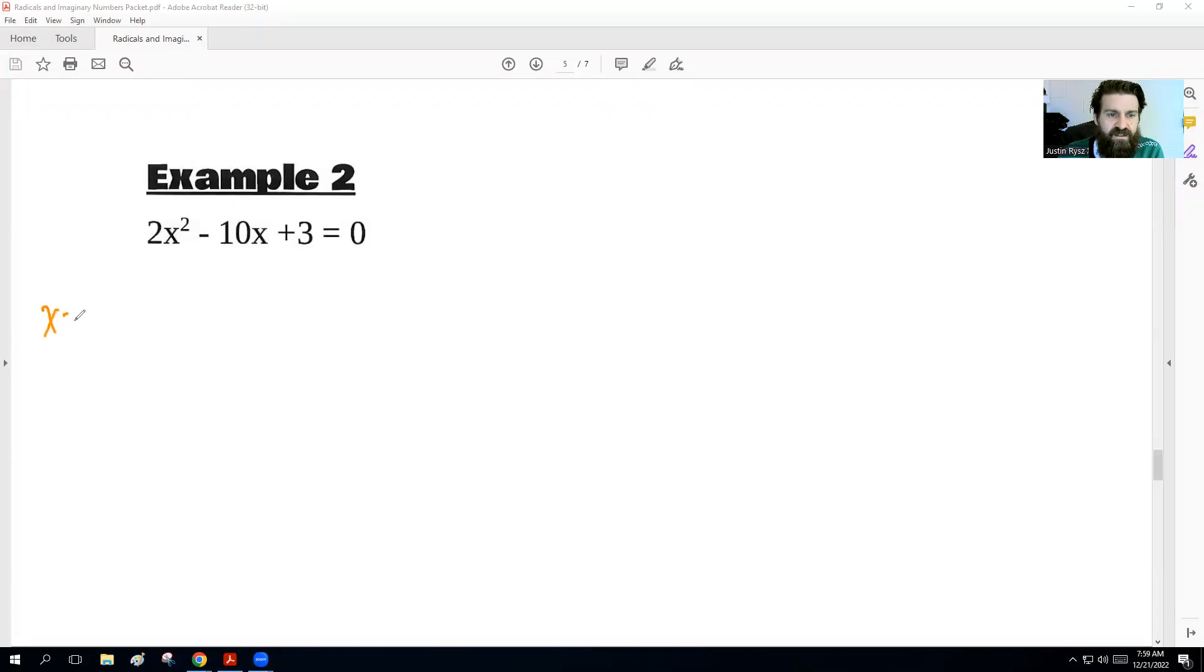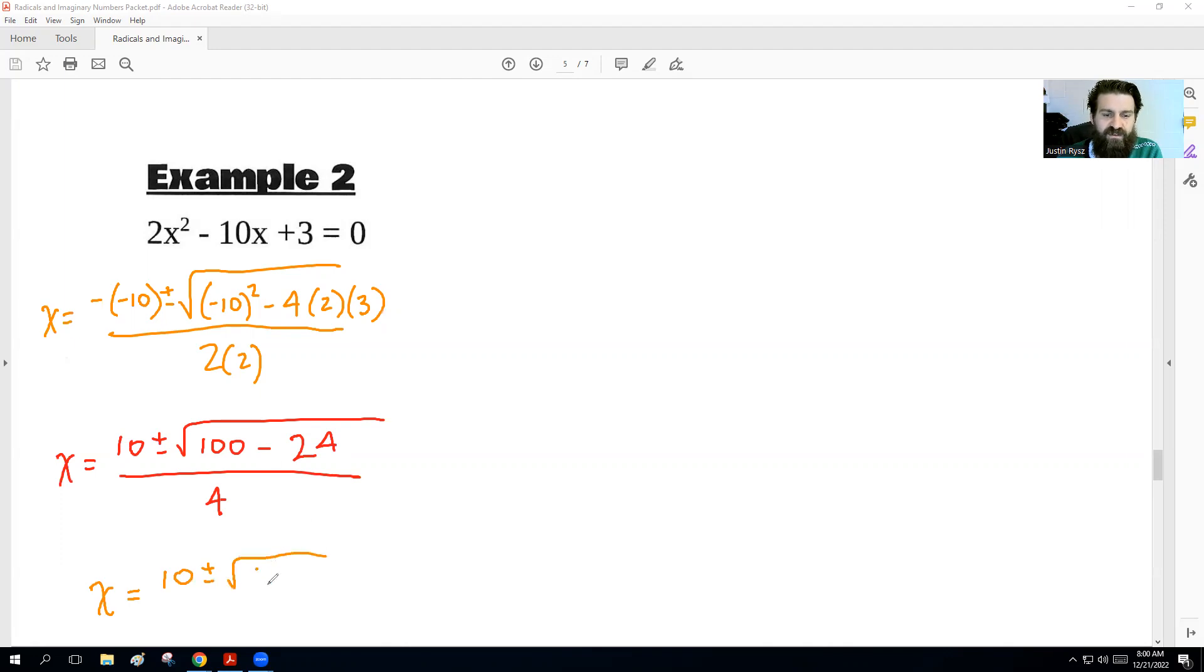I'm going to get this one started here. So we got x equals negative, b is negative 10, plus or minus the square root of. We got b squared is negative 10 squared minus 4 times, a is 2, c is 3, all over 2, and a is 2. All righty, so next, negative negative 10, when we multiply that, that's positive 10, plus or minus the square root of. Negative 10 squared is 100, a positive 100, minus 4 times 2 is 8, 8 times 3 is 24, all over 2 times 2 is 4. Okay, so then we would get x equals 10, plus or minus the square root of 76, if we subtract 100 minus 24, over 4.